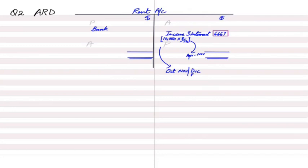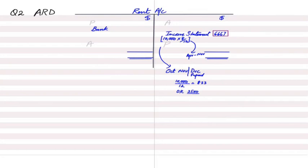We record the prepaid as balance carried down. The prepaid amount is one month's rent — £10,000 divided by 12 equals £833 per month. Alternatively, £2,500 per quarter divided by 3 months also equals £833. So £833 is the prepaid rent balance carried down at 30th November.